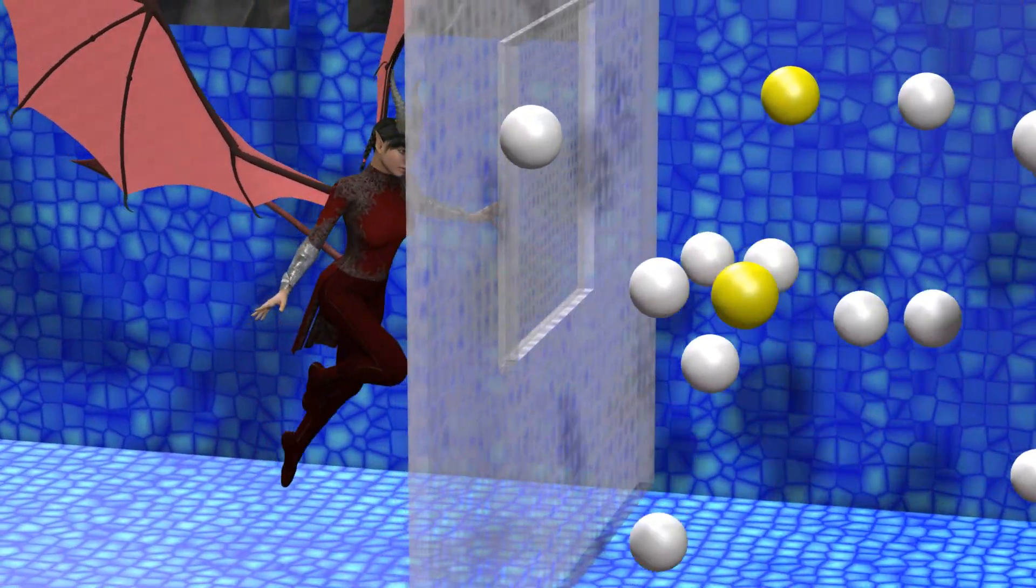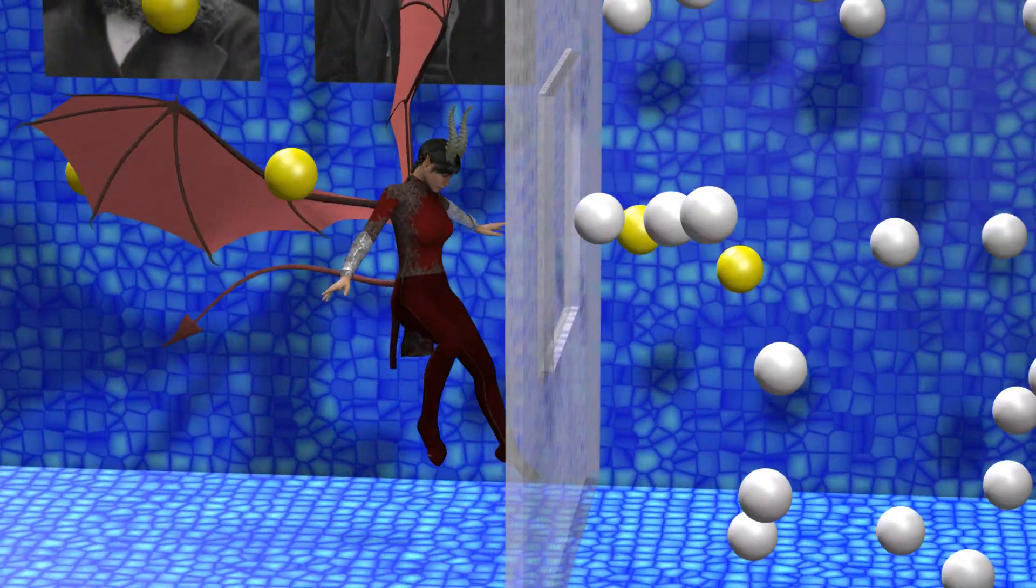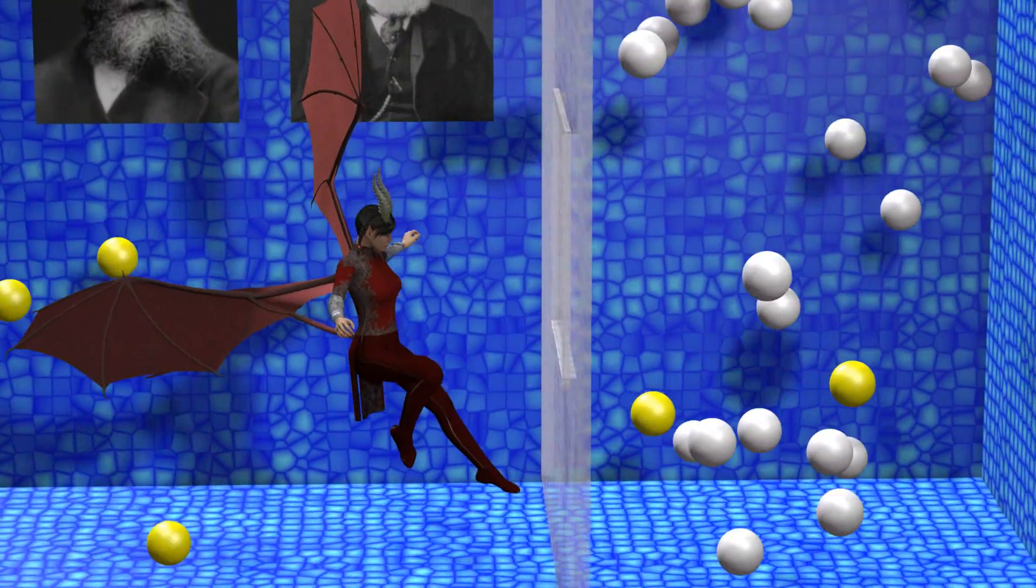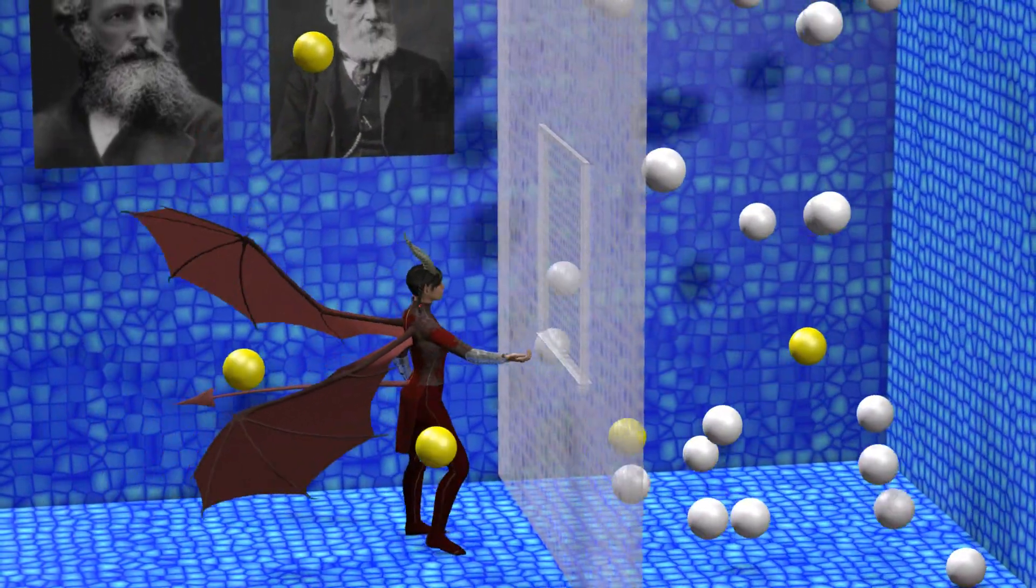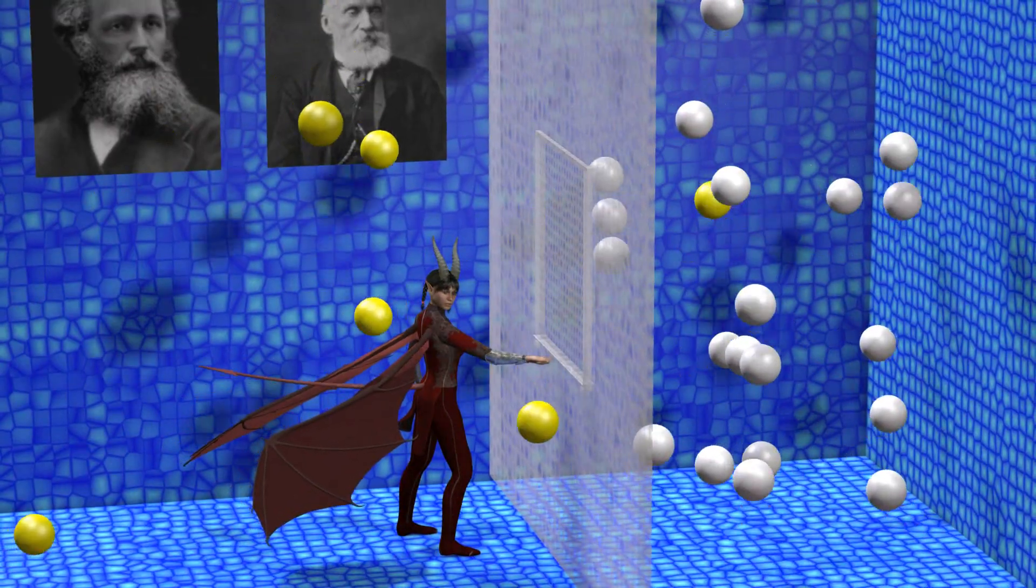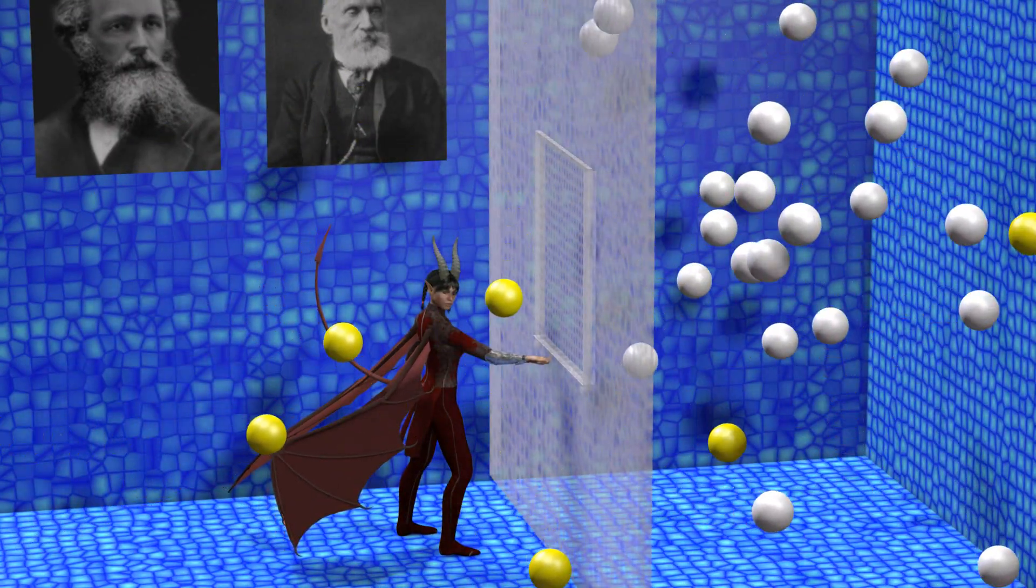It took over 100 years to figure out the real reason why Maxwell's demon does not actually violate the second law of thermodynamics, and this reason involved a revolutionary discovery.